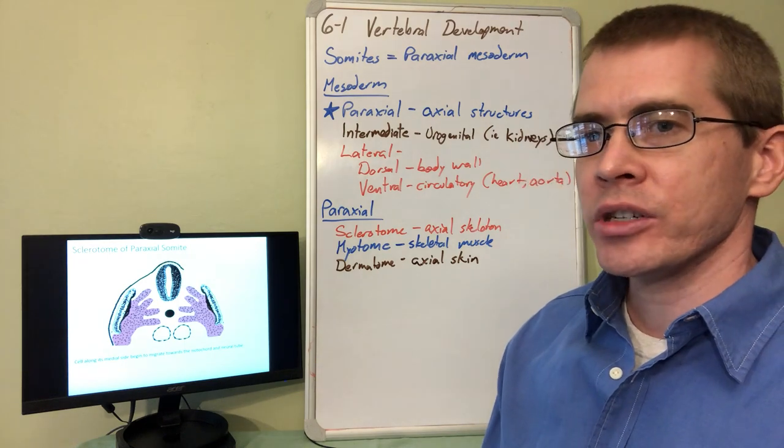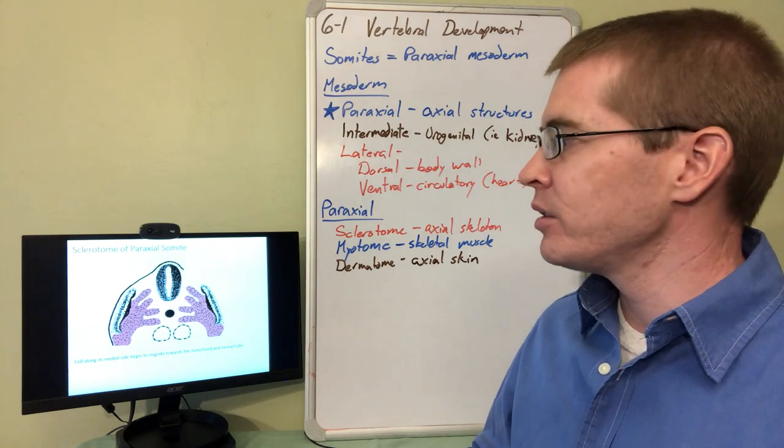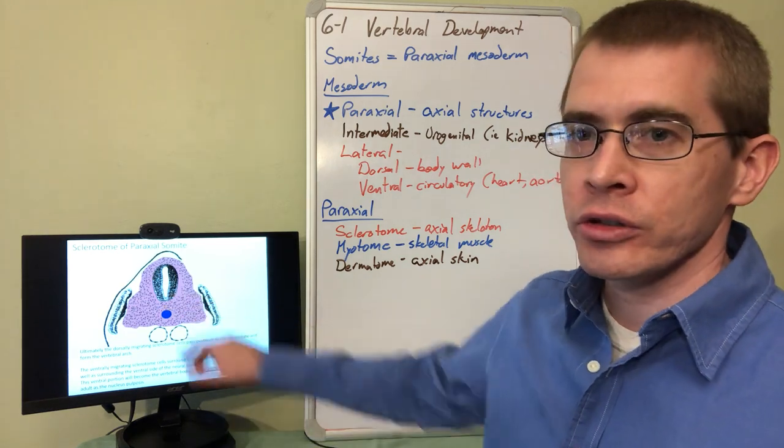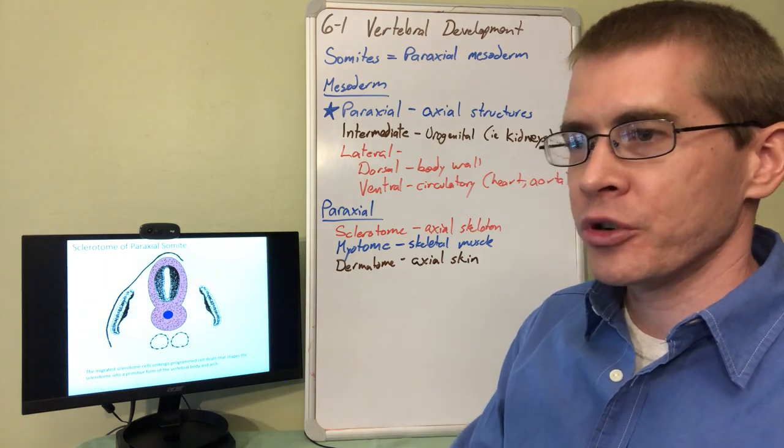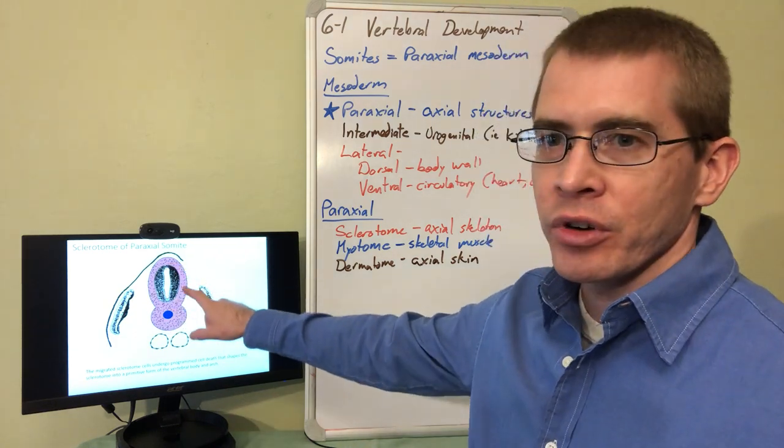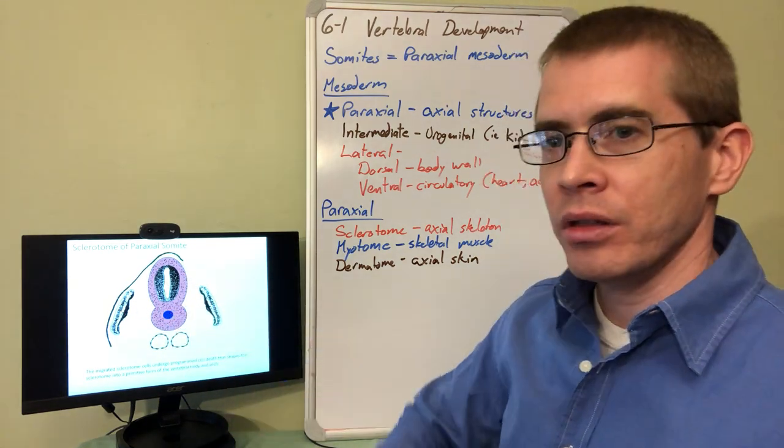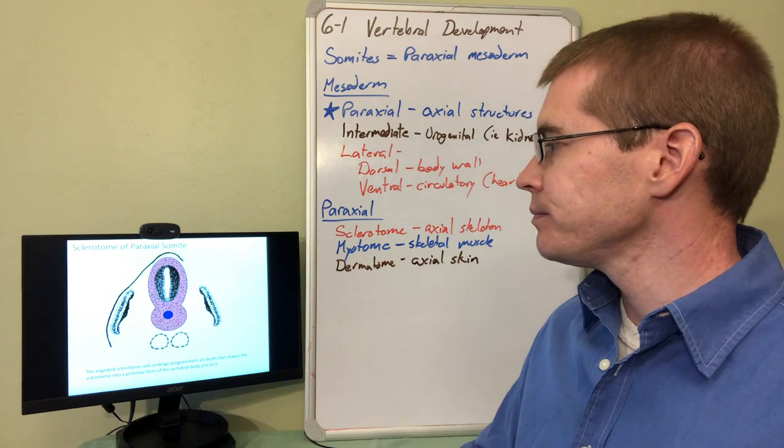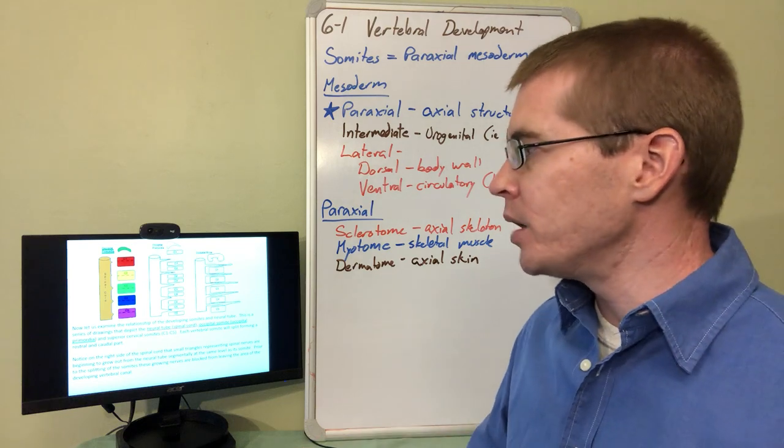Here we can see the formation of the sclerotome. In the next few slides, sclerotome cells begin to migrate toward the notochord, surrounding it and the neural tube, eventually becoming the presumptive bone model for the vertebrae. We can see the arch of the vertebrae—the lamina and pedicle—will form, along with the vertebral body surrounding the notochord, which will become part of the vertebral disc. As those cells die off, the structure of the bone model takes shape.